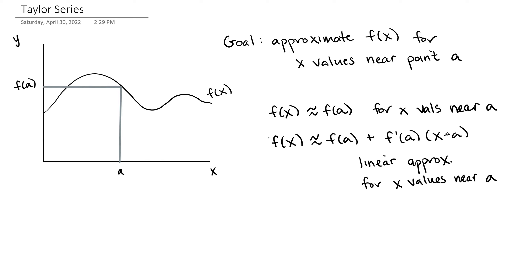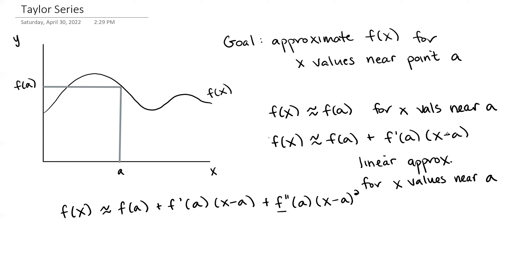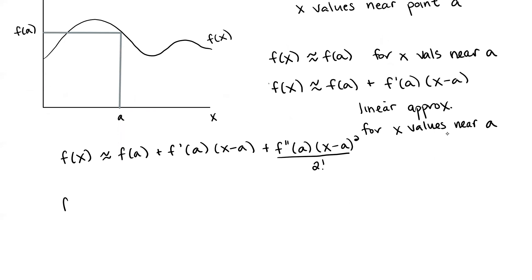We could improve our approximation by adding another term. So if we add another term, we'd have f of x is approximately f of A plus f prime evaluated at A times x minus A. Then we add on the next term: we take two derivatives of f of x evaluated at A, multiply by x minus A squared, and divide by 2 factorial. And we could just keep going like this. We could add a fourth term by taking three derivatives of f evaluated at A, multiply by x minus A cubed, and divide by 3 factorial.